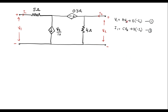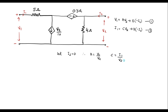If we make I2 equal to 0, we get parameters A and C; if we make V2 equal to 0, we get parameters B and D. So first, let I2 = 0. Under this condition, A = V1/V2 and C = I1/V2.